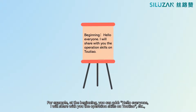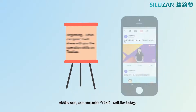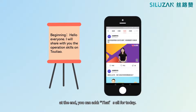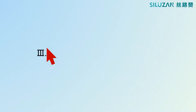For example, at the beginning you can add: 'Hello everyone, I will share with you the operation skills on Totiao.' At the end, you can add: 'That's all for today. For more information on Totiao, please follow Siluzhan.' In this way, they may become our followers.